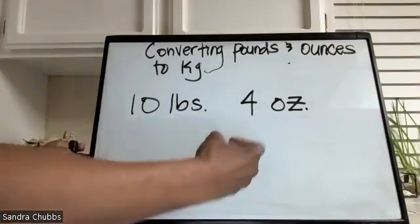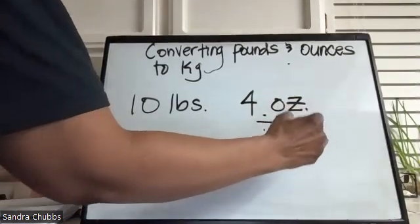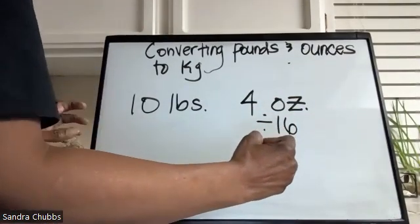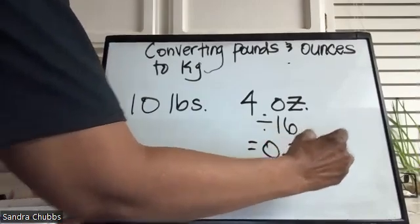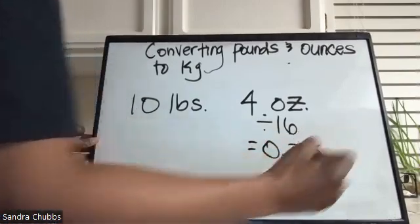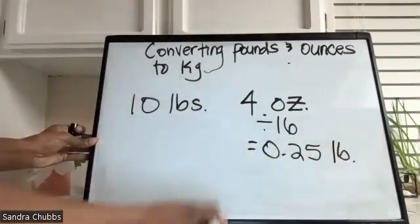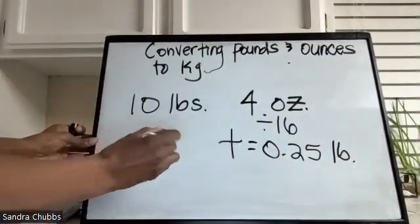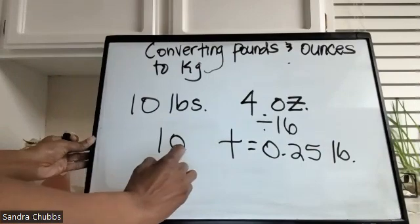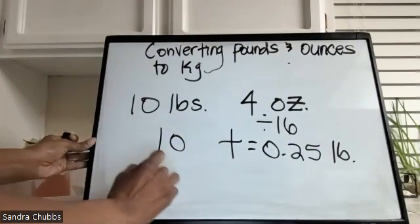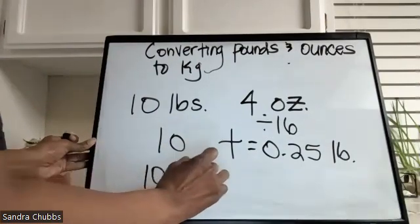So we take the four ounces, we divide by 16, and that gives us 0.25 pounds. We take that and we add it to the 10 here, and that gives us 10.25 pounds.